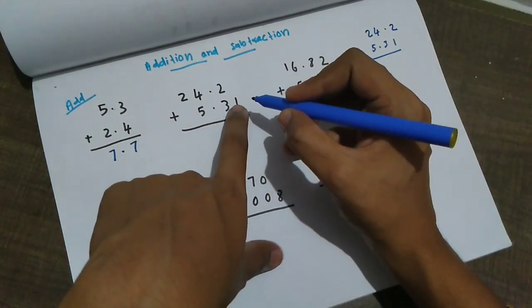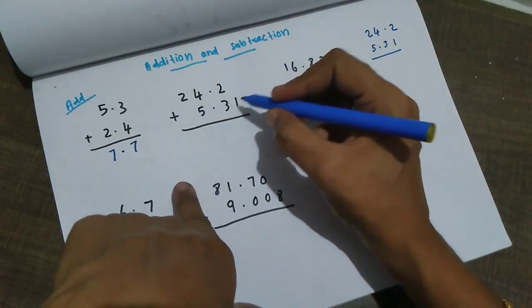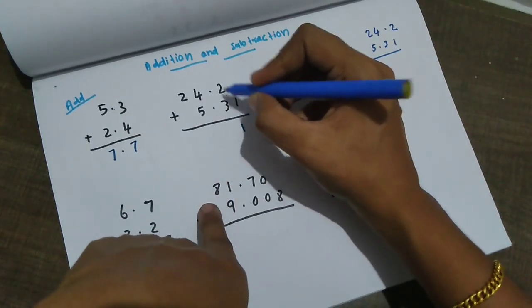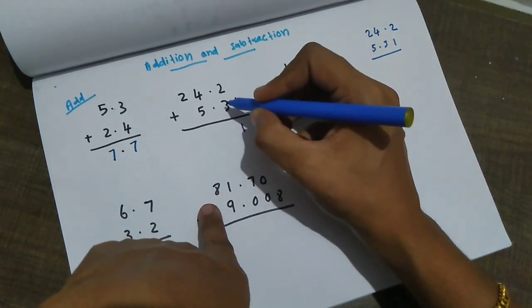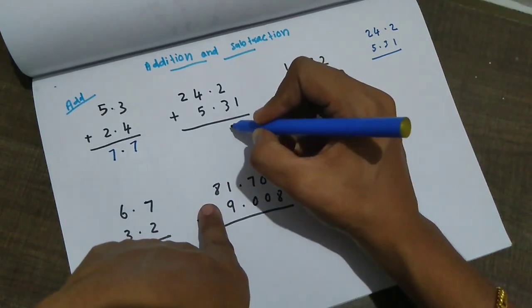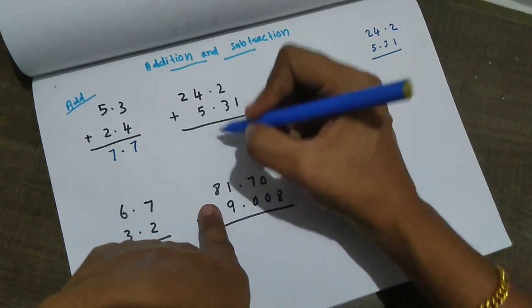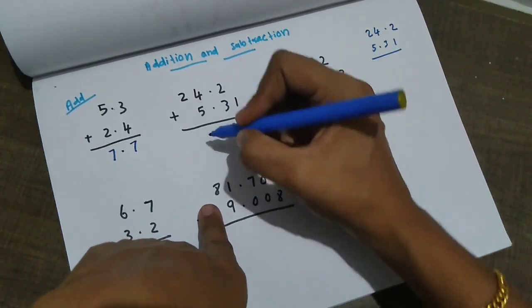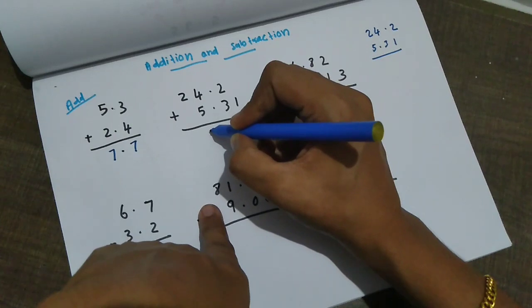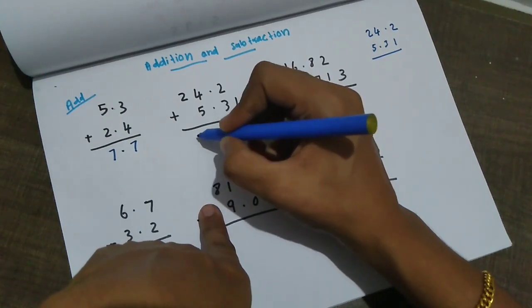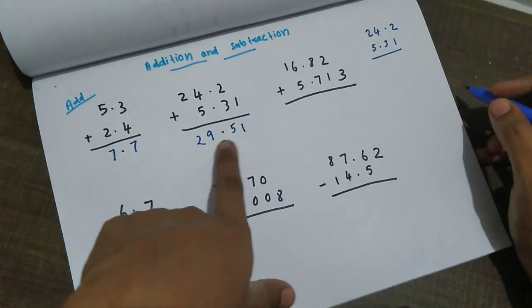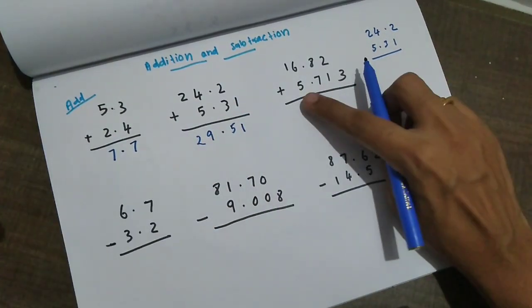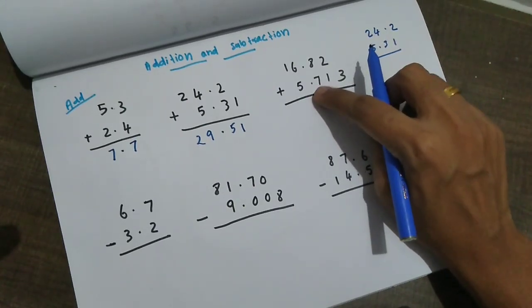We add the digits: 1, then 3 plus 2 is 5, then 5 plus 4 is 9. The answer is 29.51. Place the decimal point in the answer. This is just an example.